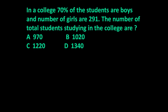The given problem is: in a college, 70% of the students are boys and the number of girls is 291. The total number of students studying in the college — four options are given: 970, 1020, 1220, and 1340 — and we have to find out the total number of students in the college.